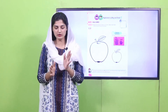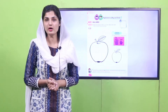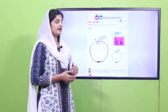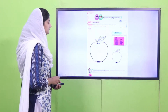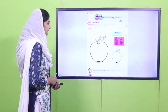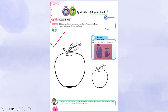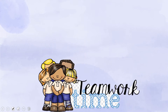Now I want you to open this page in your book. Playgroup, hopefully you have found this page. On this page we have a big apple and a small apple, and we have a homework activity. So let's get on with the lesson.